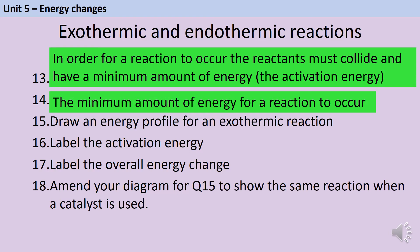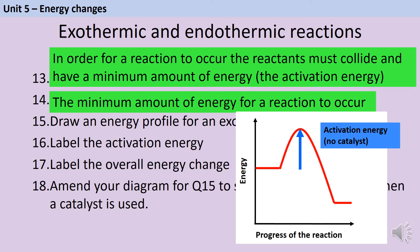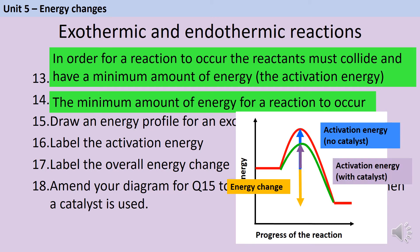An energy profile for an exothermic reaction would look like this. It's important that we have horizontal lines on the left and right to represent the reactants and the products. We have a hump in the middle, and because this is an exothermic reaction, the reactants on the left need to be higher than the products on the right. The activation energy is always labelled from the height of the reactants up to the top of the hump — what we call the transition stage — so you should have an arrow there. The overall energy change goes from the reactants to the products, so for an exothermic reaction it goes down. If a catalyst were used, this will provide an alternative pathway with a lower activation energy, so the hump of the diagram should be less high.